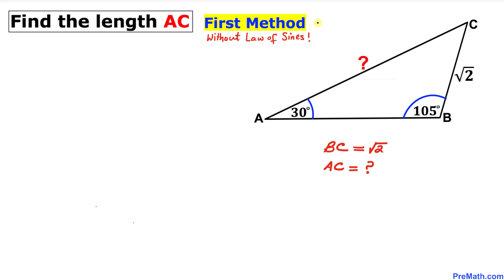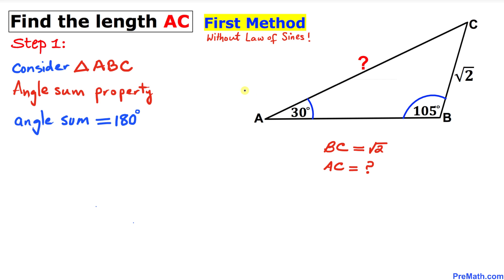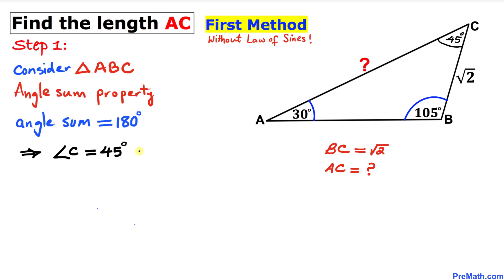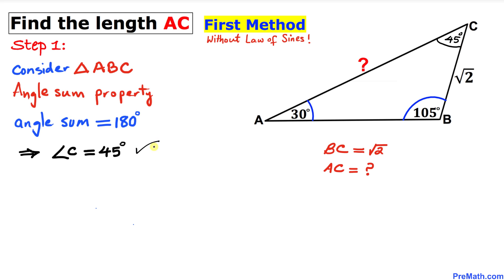Here is our first method, without the law of sines. Let's focus on triangle ABC. We know that the sum of the angles is 180 degrees. Angle A is 30 degrees and angle B is 105 degrees, so the remaining angle C has got to be 45 degrees. Therefore angle C is 45 degrees.